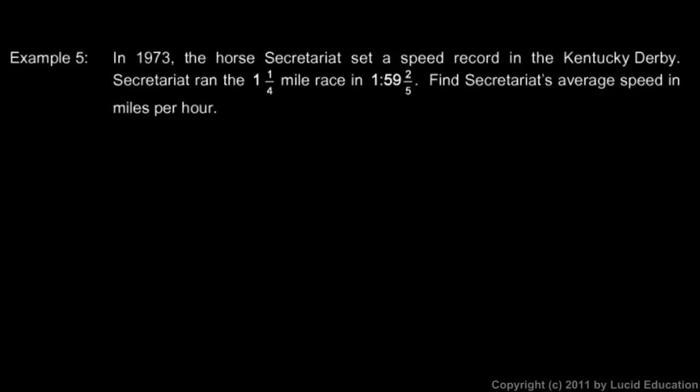In this example, we're told that in 1973 the horse Secretariat set a speed record in the Kentucky Derby. Secretariat ran the one and a quarter mile race in one minute, fifty-nine and two-fifths seconds — that's how they record the time: the minutes, then the colon, then the seconds and the fraction of a second.